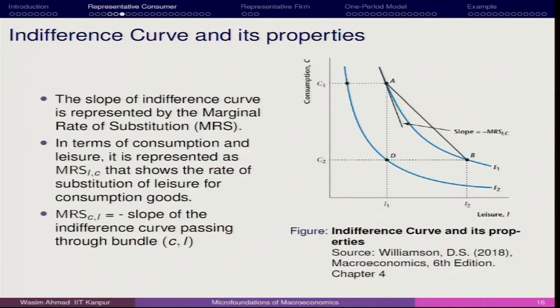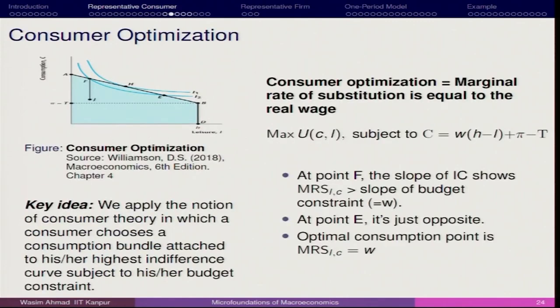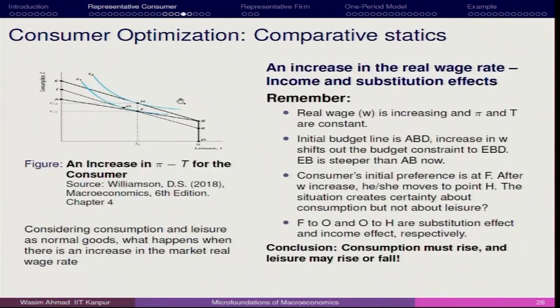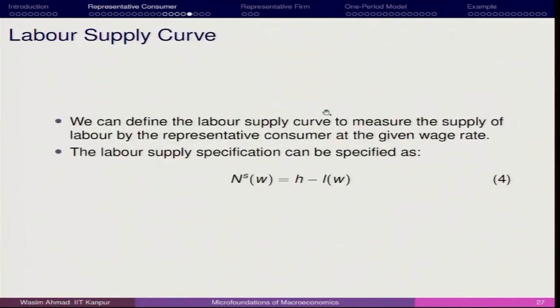Here, what we are talking about is what happens when we have an increase in wage rate. We saw that the increase in wage rate has a direct impact on consumption, but for leisure it is not very certain whether it will rise or fall. Labor supply shows the supply of labor that the representative agent supplies at the given wage rate, which is decided by the factor market and also by the marginal productivity of labor.